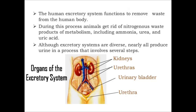The human excretory system functions to remove waste from the human body. During this process, animals get rid of nitrogenous waste products of metabolism including ammonia, urea and uric acid. Nearly all excretory systems produce urine through a process involving several steps. The organs included in this function are kidneys, ureters, urinary bladder and urethra.